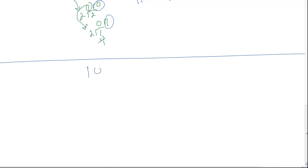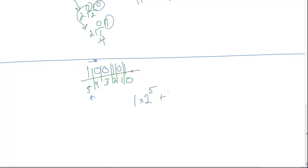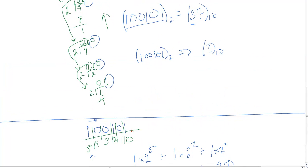So we write out 1, 0, 0, 1, 0, 1 and find our Radix point — this is what we did in the last video — and find the place values. In Radix form, we start from the left and go right. Starting with the leftmost 1: 1 times 2 to the 5th. We can ignore the zeros. So we do 1 times 2 to the 5th, plus 1 times 2 squared, plus 1 times 2 to the 0. That's 32 plus 4 plus 1, which is 37 in base 10. So we've just verified that this is indeed equal to 37.